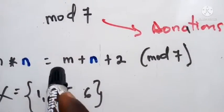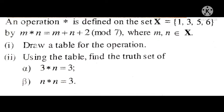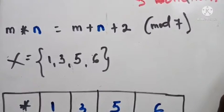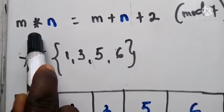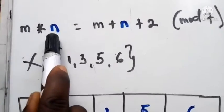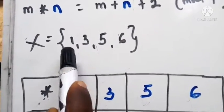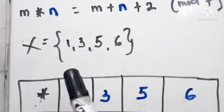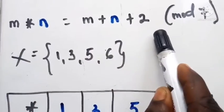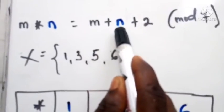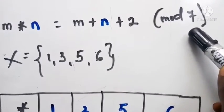Now let's look at the questions. We are given an operation — let's call it 'star'. We are going to combine a first number and a second number. The members we are picking come from the set {1, 3, 5, 6}. We combine two of them using the rule: first person plus second person plus two, and everything is done in mod 7.